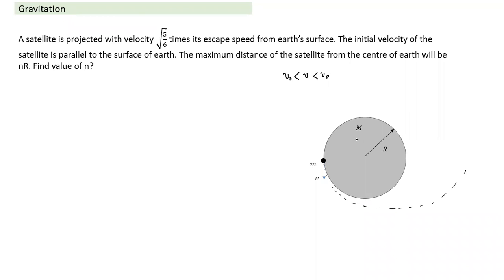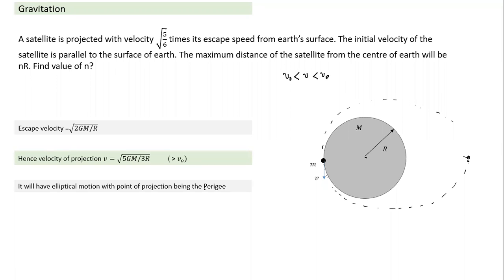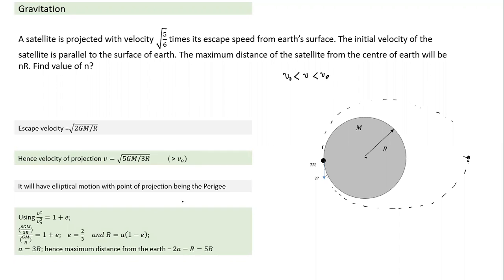Since the satellite has an elliptical path, we need to find the maximum distance. One way is using the relation: v² / v₀² = 1 + e at the perigee. We substitute the projection velocity divided by orbital velocity squared. Orbital velocity equals √(GM/R). Based on the numbers, we arrive at e = 2/3. With e = 2/3, the nearest distance is a(1 − e) = R, giving a = 3R.